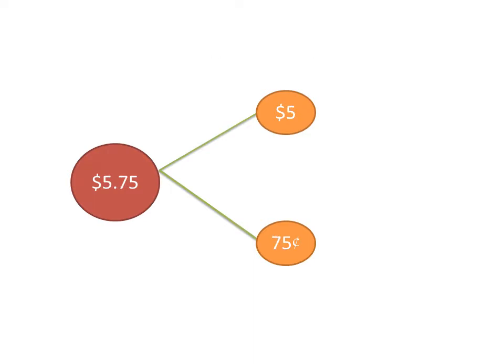Let's find the number bond with another example: dollar 5.75. There are 5 dollars and 75 cents. So 5 dollars and 75 cents makes 5.75.